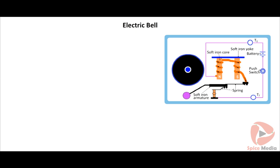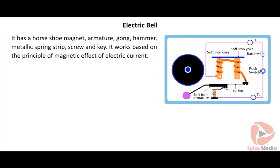Let us learn the construction and working of an electric bell. It has a horseshoe electromagnet, armature, gong, hammer, metallic spring strip, screw, and key. It works on the principle of the magnetic effect of electric current. When the circuit is closed, current flows and the electromagnet gets magnetized, attracts the hammer, and hits the gong. When the hammer hits the gong, the circuit breaks at the screw and the electromagnet gets demagnetized. When the electromagnet returns to its original position, the circuit is closed again and the process repeats automatically, so the bell continues to ring as long as the circuit is closed.